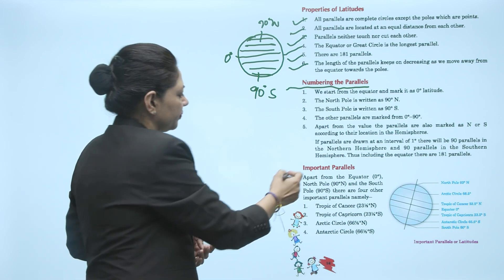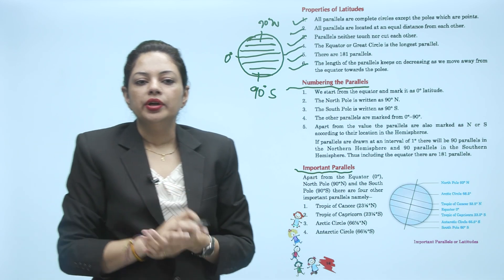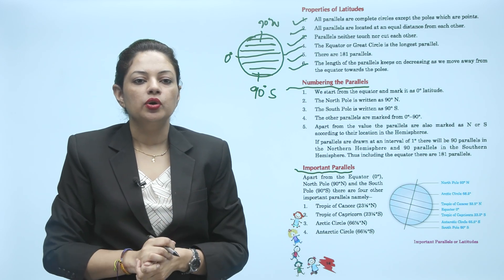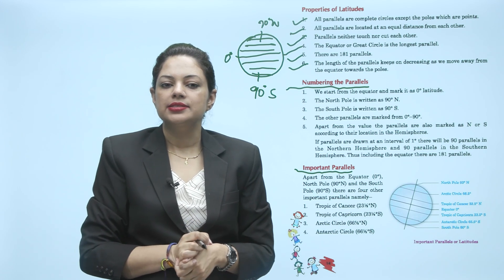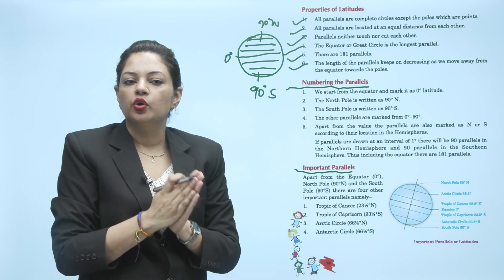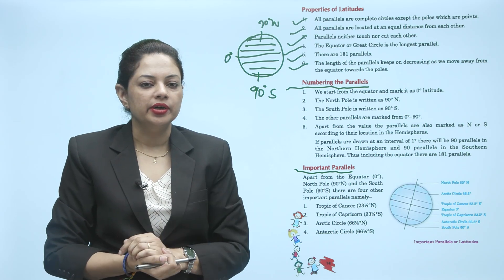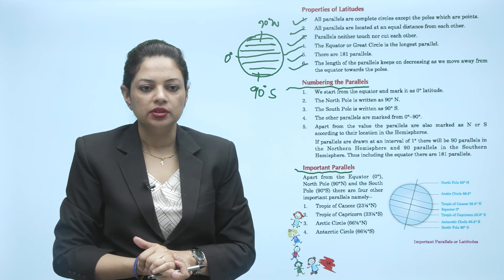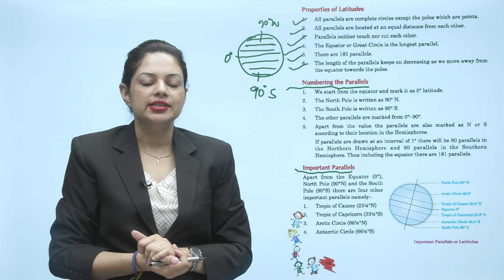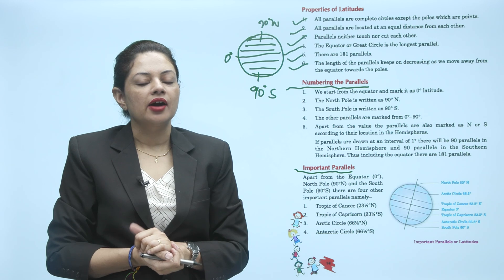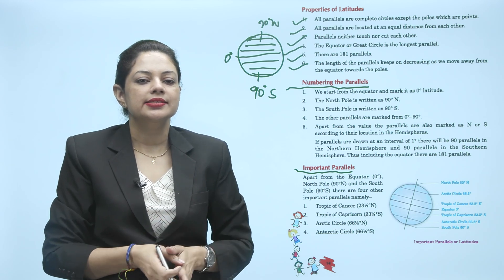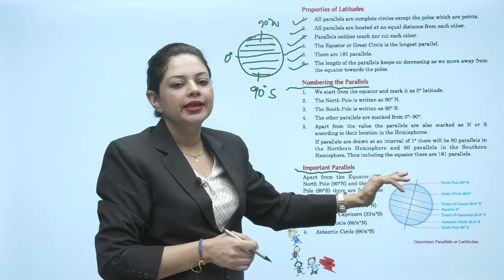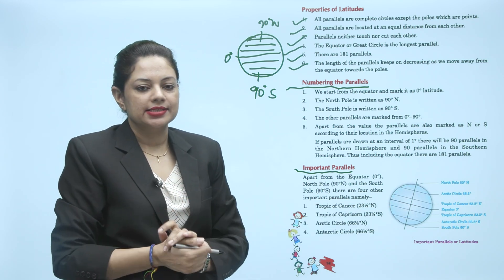Important parallels: Apart from the equator (0 degree), north pole (90 degree N), and south pole (90 degree S), there are 4 other important parallels. First, Tropic of Cancer at 23.5 degree north. Second, Tropic of Capricorn at 23.5 degree south. Third, Arctic Circle at 66.5 degree north. Fourth, Antarctic Circle at 66.5 degree south. 2 आपकी north में आएंगी और 2 आपकी southern hemisphere में आएंगी.